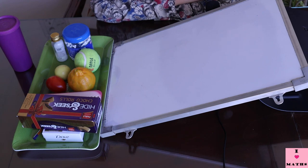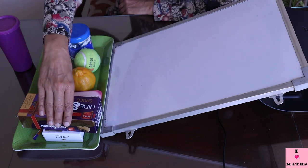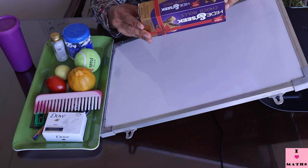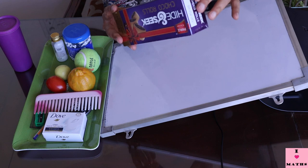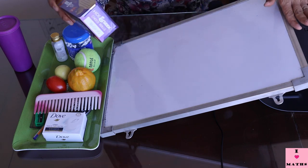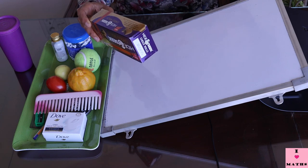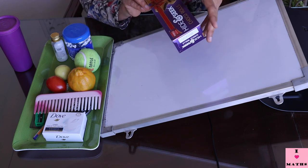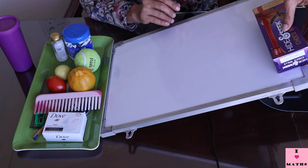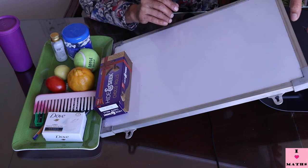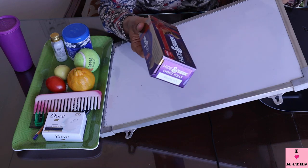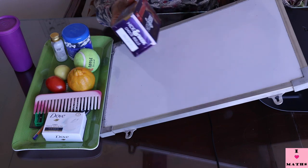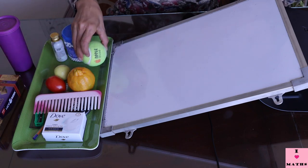I have a cuboidal box. I have also made a makeshift slide using a board to see whether something is going to slide or roll. Let us see — this box slides down. This is called sliding. So this cuboidal box can only slide, it cannot roll.